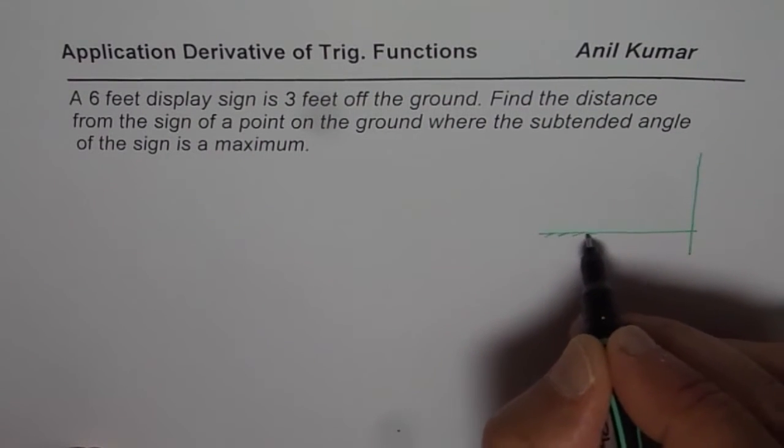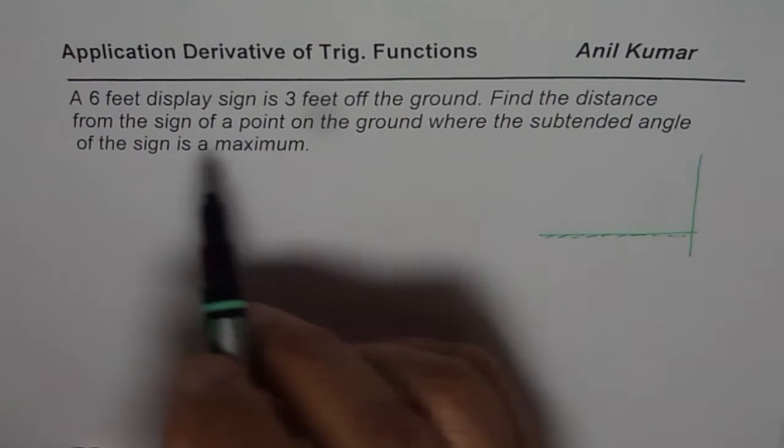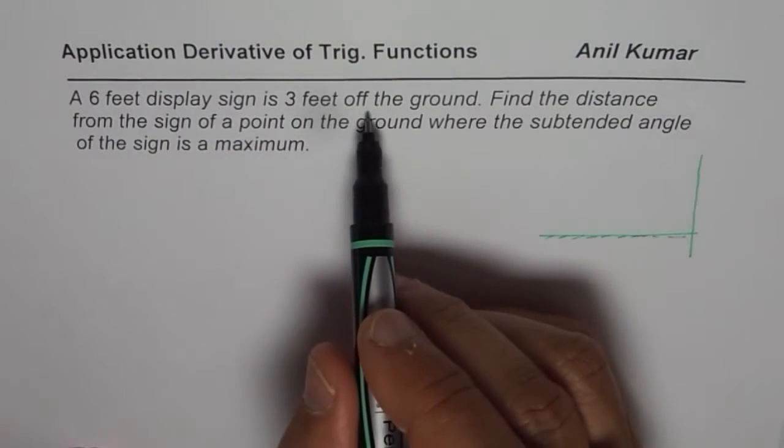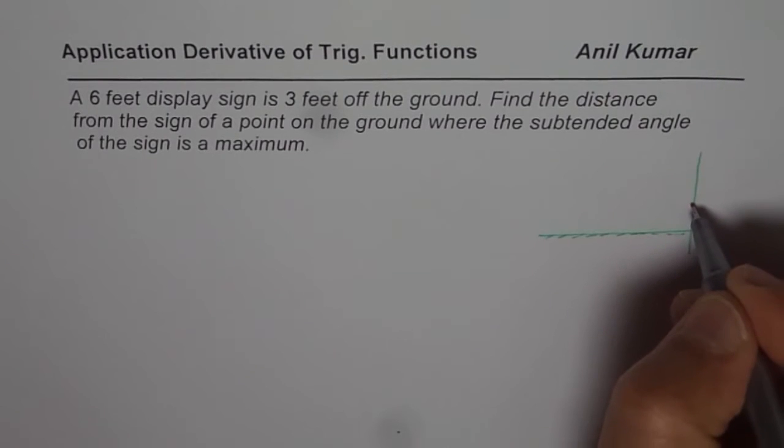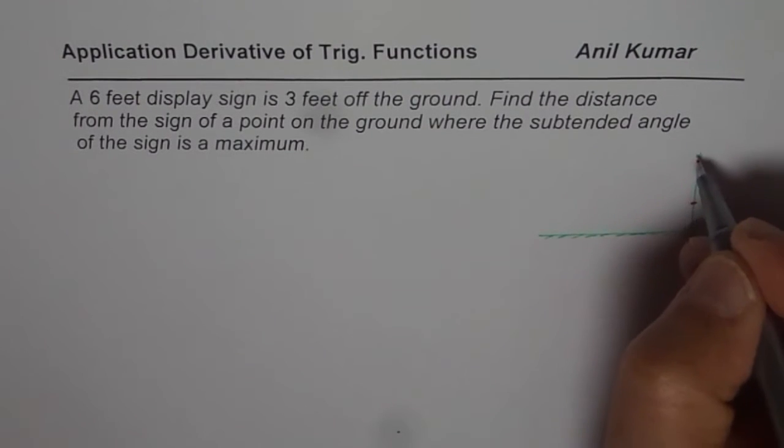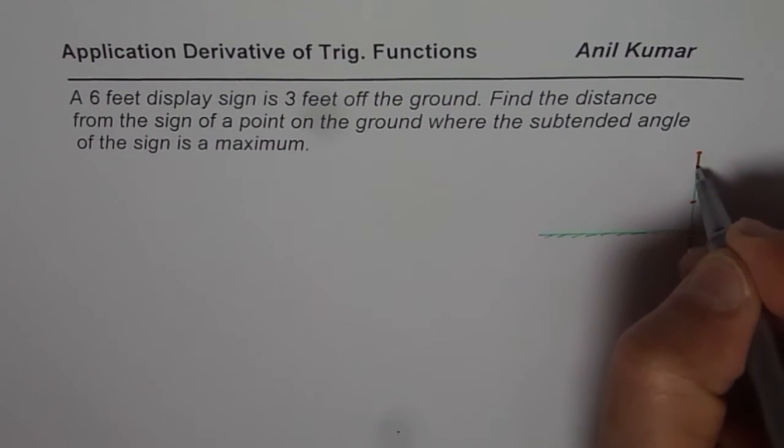Let's say this is the ground and then we have a display sign 3 feet off the ground on some wall. So what we have here is, let's say this is 3 feet for us and then that is twice almost. So we have a display sign here.